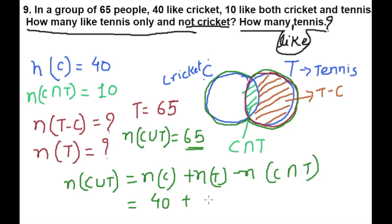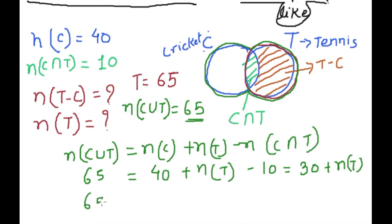n(T) we don't have, n(C intersection T) is 10, so this is 30 plus n(T). And this we have is 65, so 65 equals 30 plus n(T).